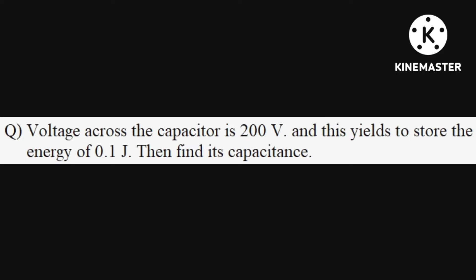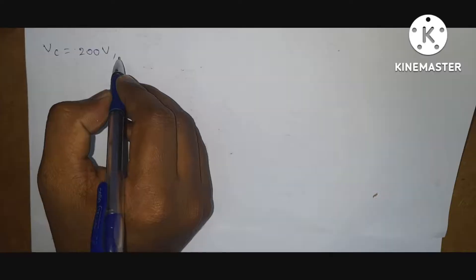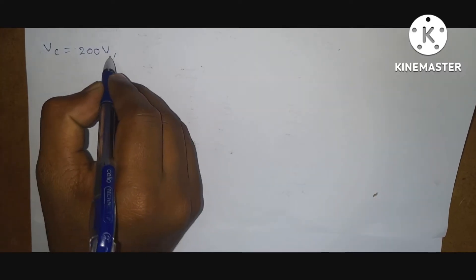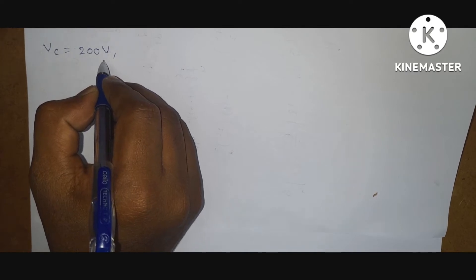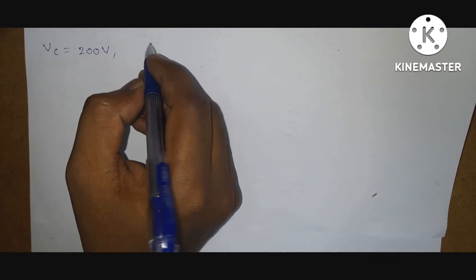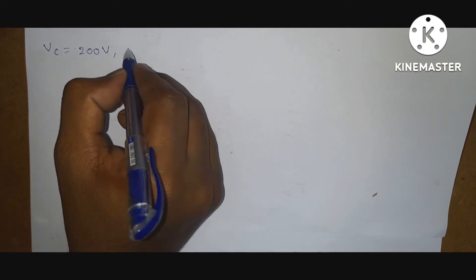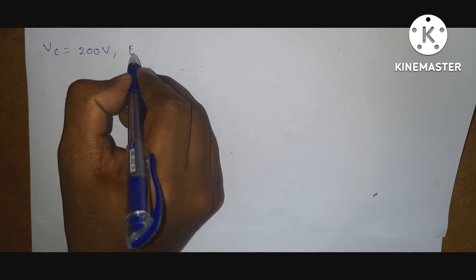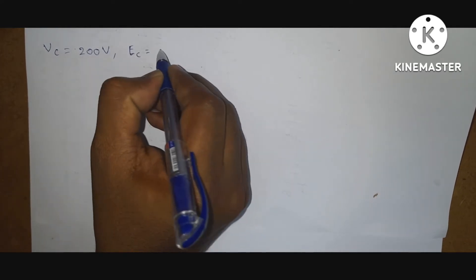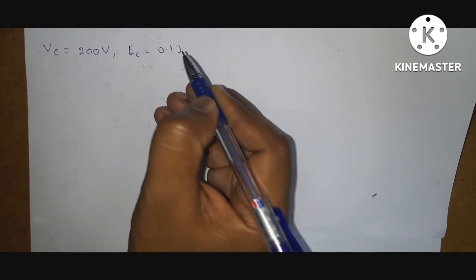Next question. Voltage across the capacitor is 200 volts, and this yields to store the energy of 0.1 joules. Then find capacitance. First write down the given data. So what is the capacitor voltage? Vc is equal to 200 volts. And energy stored in the capacitor is given: Ec is equal to 0.1 joules.